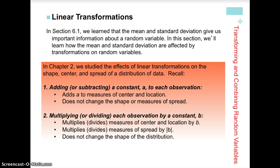Just a quick refresher: when we perform a linear transformation on a random variable and we add or subtract a constant, we will change the measure of center and the location of the distribution — essentially sliding it along the horizontal axis — but it will not change measures of spread.